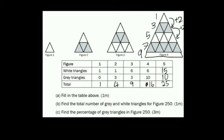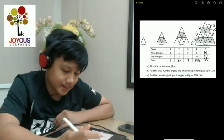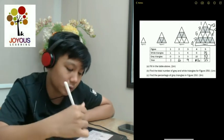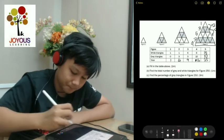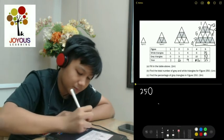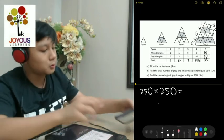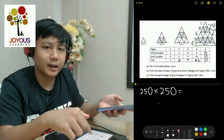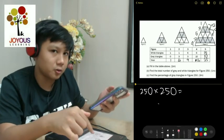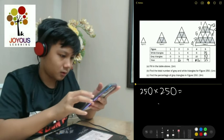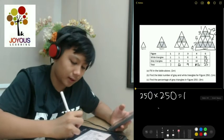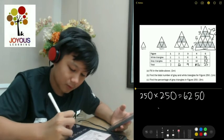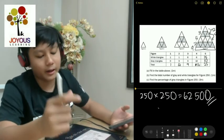Now second question, question B. Find the total number of gray and white triangles for figure 250. So as I said earlier, the figure number times the figure number is equal to the total number of triangles. So since it's figure 250, it will be 250 times 250. This looks like a paper two question, so you should be allowed to use a calculator. 250 times 250 is equal to 62,500. That is the answer for question B.